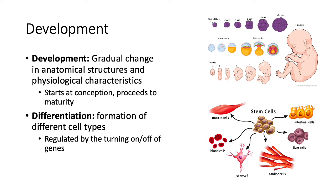When we talk about development, we're also talking about the fact that cells are undergoing differentiation. We start with nondescript cells that go on to create stem cells, which can give rise to highly specialized cells — from muscle to intestinal cells. This specialization arises from turning on or off genes. By regulating which genes are expressed, we can create a muscle cell, which is very different from a nerve cell or a liver cell.